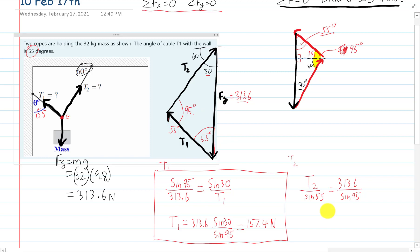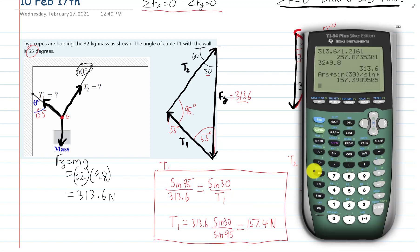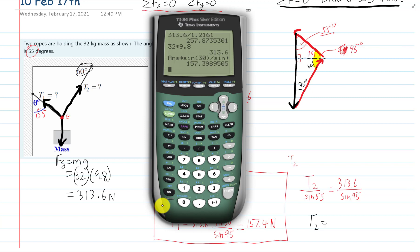And therefore T2 is going to equal, I'll just plug it into the calculator. The calculator will do my work for you guys. It'll be this number 313 up here, multiply it by the sine of 55 and divided by the sine of 95. Times the sine of 55 divided by the sine of 95, and that should be 257.87 newtons.